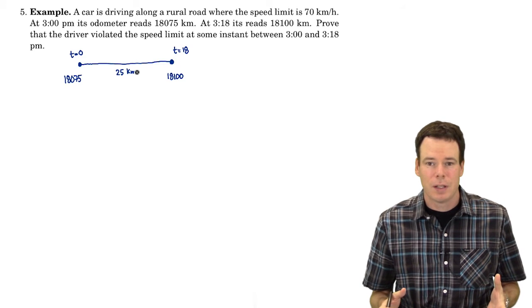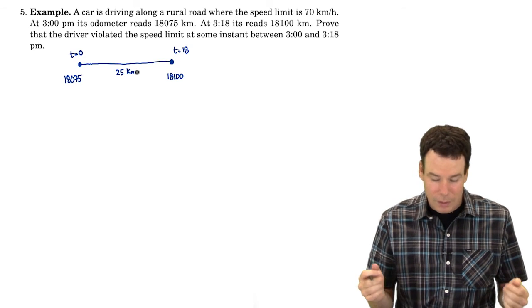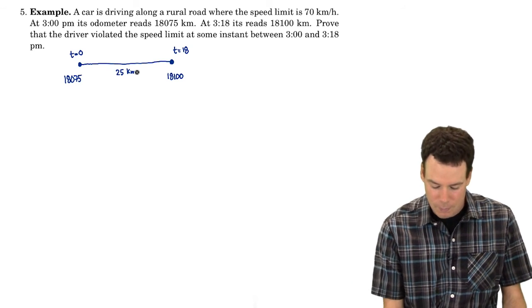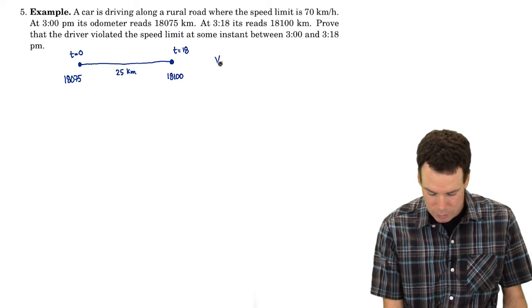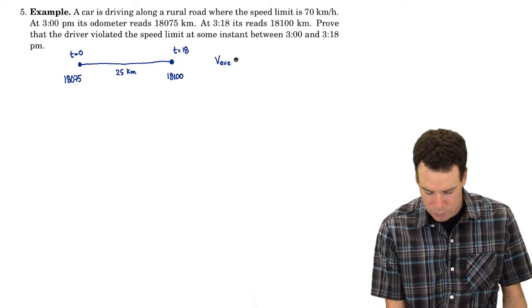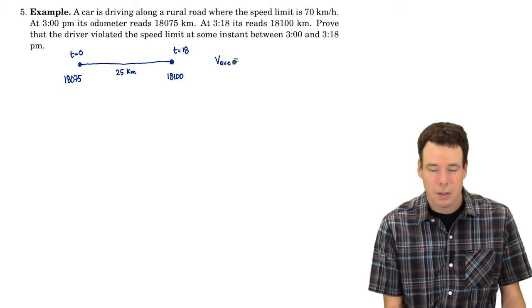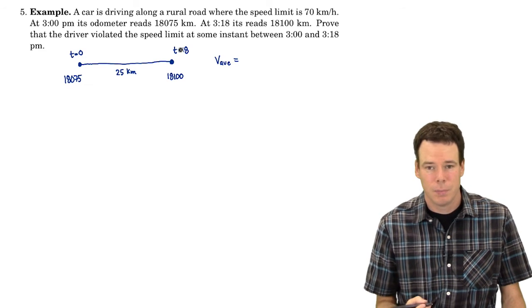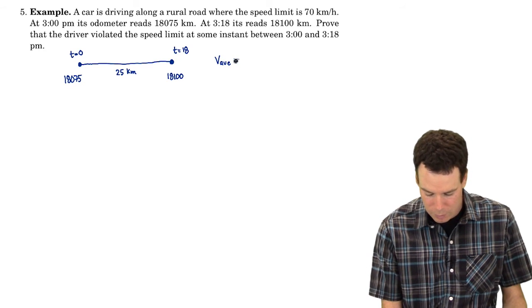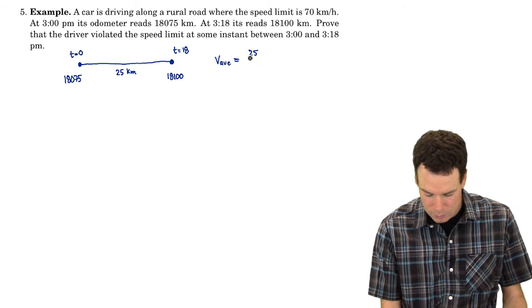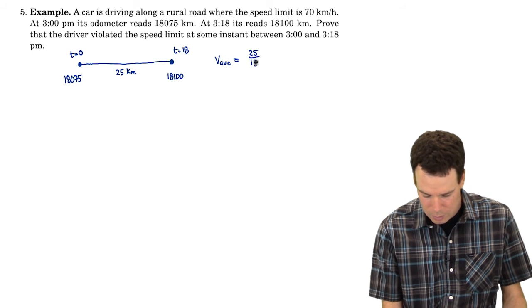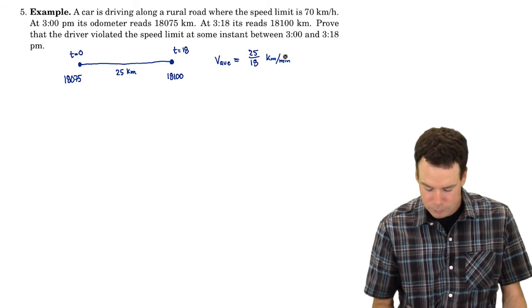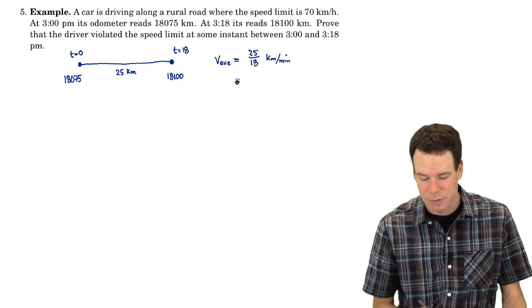So with the information given, what can I find? Well, I can find my average velocity. What's my average velocity? The average velocity is the distance you travel divided by the time of travel. So the average velocity is 25 divided by 18, and that's kilometers per minute. Let's express this in kilometers per hour.